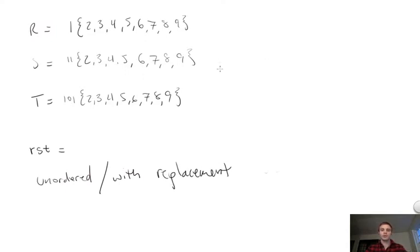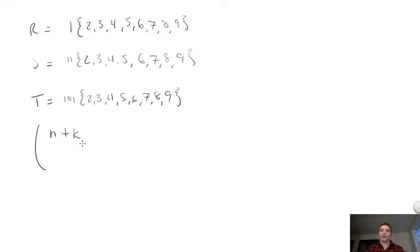When you do that, this is your calculation. You're going to do, so suppose this set has N elements and we want to draw K elements from that set. You get N plus K minus one, and then N. This is equal to N plus K minus one factorial over